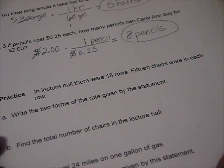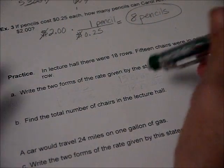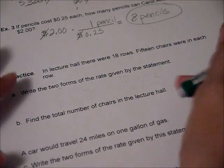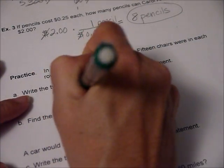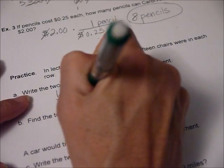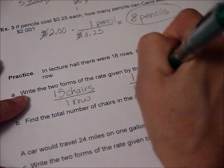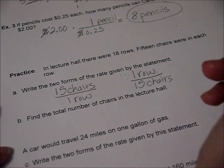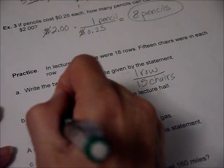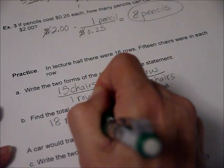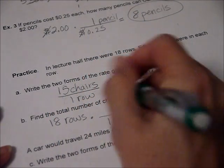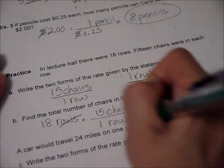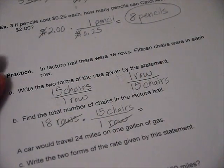In lecture hall, there were 18 rows, 15 chairs were in each row. This one's a little different. You might have wanted to do a unit fraction with 15 and 18. Think of it this way: there are 15 chairs in one row. So 15 chairs in one row, or one row had 15 chairs. We're going to use that in order to answer, find the total number of chairs in the lecture hall. So there were 18 rows and one row had 15 chairs. You see how I'm putting chairs on top so that the row cancels out?